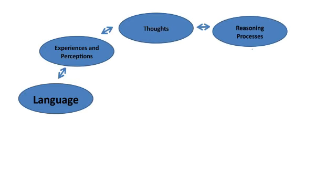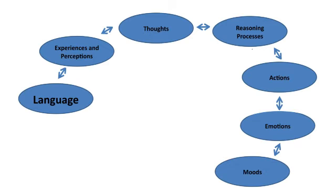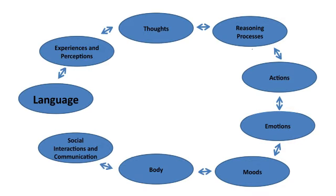Language, experiences and perceptions, thoughts, reasoning processes, actions, emotions, moods, body, and social interactions and communication. Any change or stimulus on any of these links causes a wave of changes in both directions, affecting all the others.